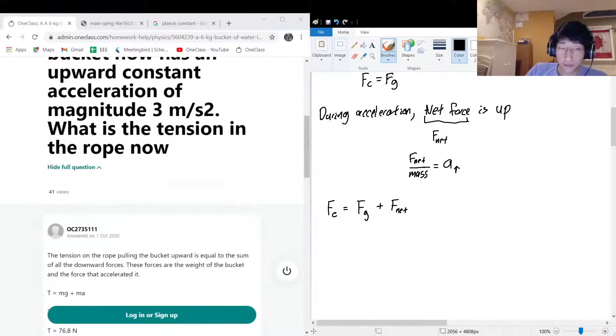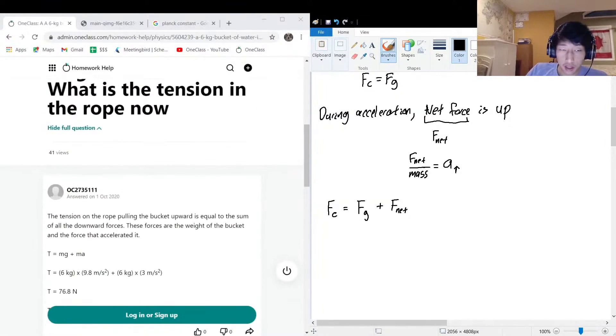Okay, you can kind of see the exact way that they set it up here. So we know with Newton's second law that F equals ma. So this is going to be m times the acceleration of gravity, plus the mass multiplied by the acceleration due to the upwards pull, which is a_up. And we can factor out the mass, so F_c equals mass times (gravity plus acceleration upwards).